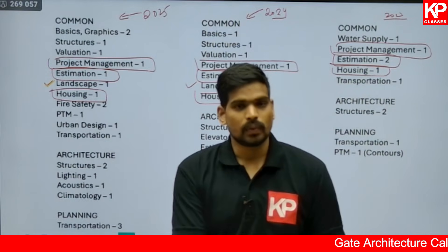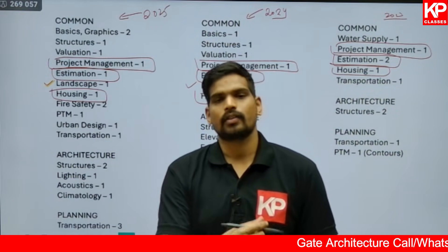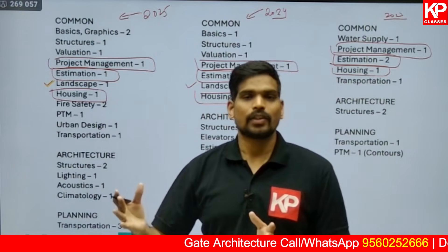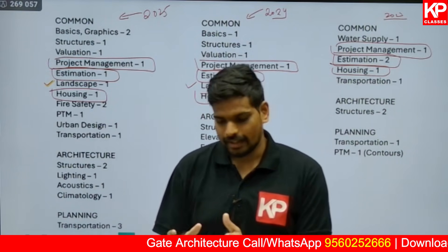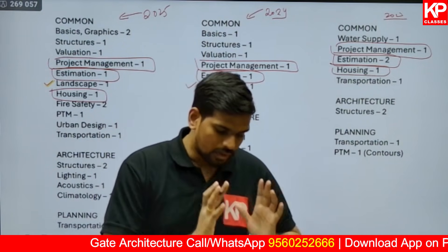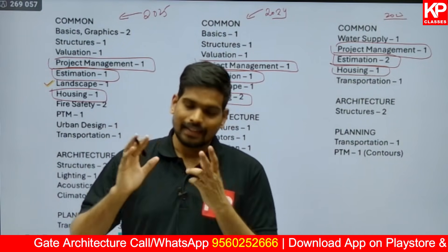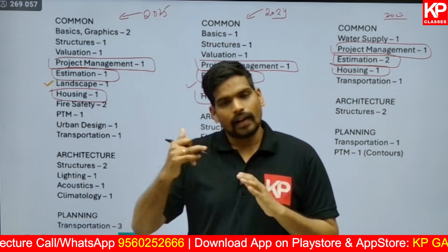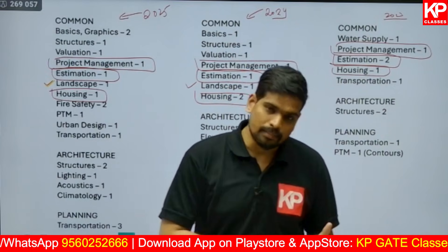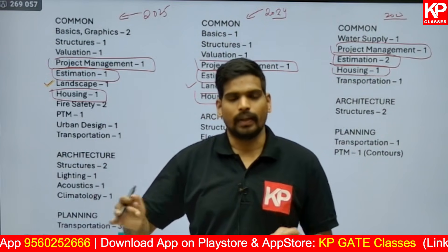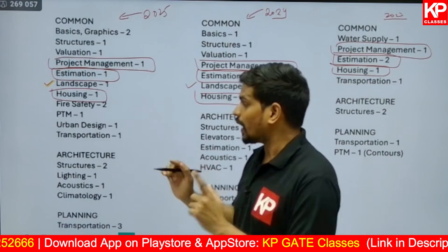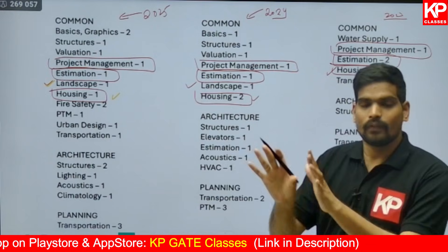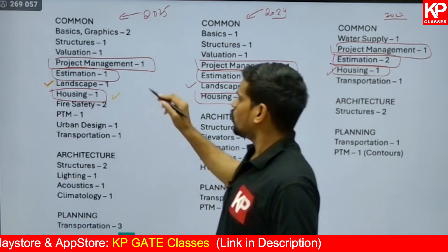For Housing numericals, you need to know how to calculate built-up area using FAR, ground coverage, and building height restrictions. You also need to calculate the percentage of different dwelling units — HIG, MIG, and LIG — and understand housing need and shortage calculations. These numerical areas are well-defined, and once you cover them, you can be confident of scoring at least two marks without the risk of negative marking.